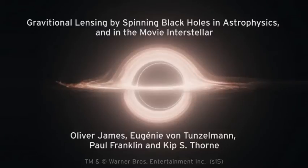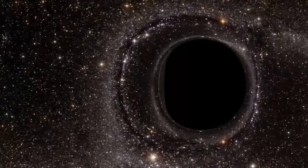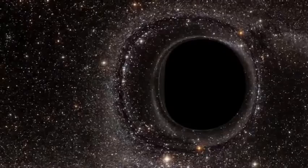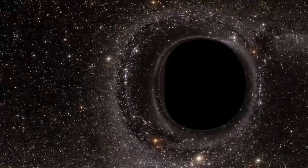Christopher Nolan's movie Interstellar was the driving force behind this work. A key part of this project was the development of the Double Negative Gravitational Renderer. This computer code creates images by modeling the path of light as it's warped by the immense gravity of a black hole.